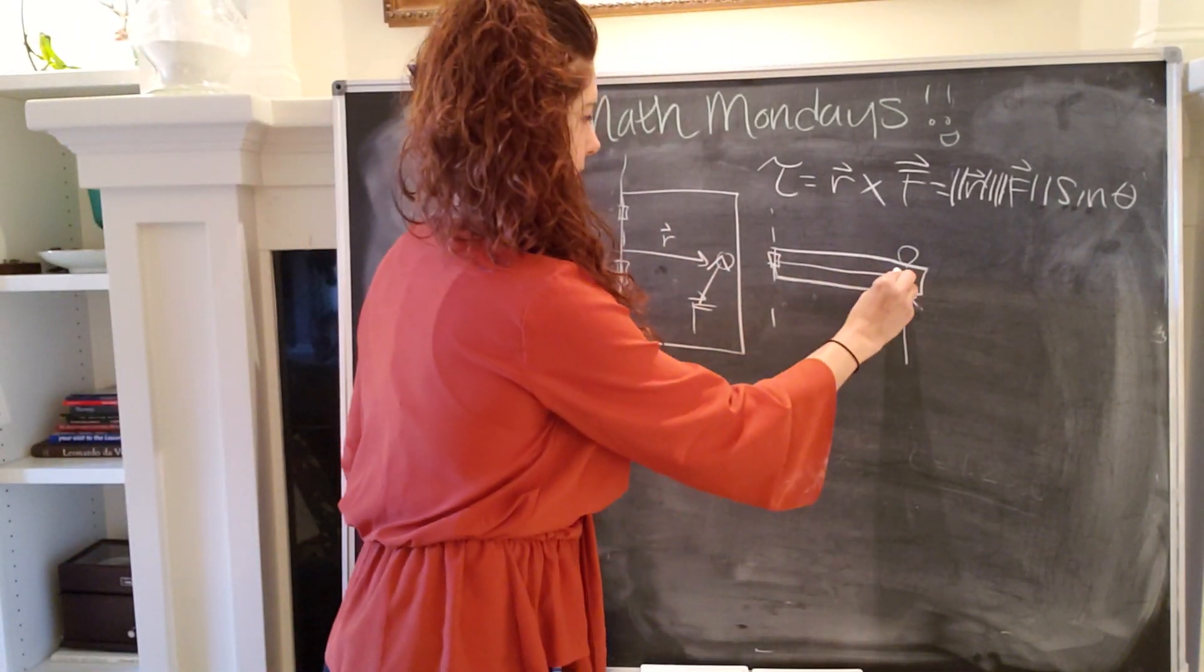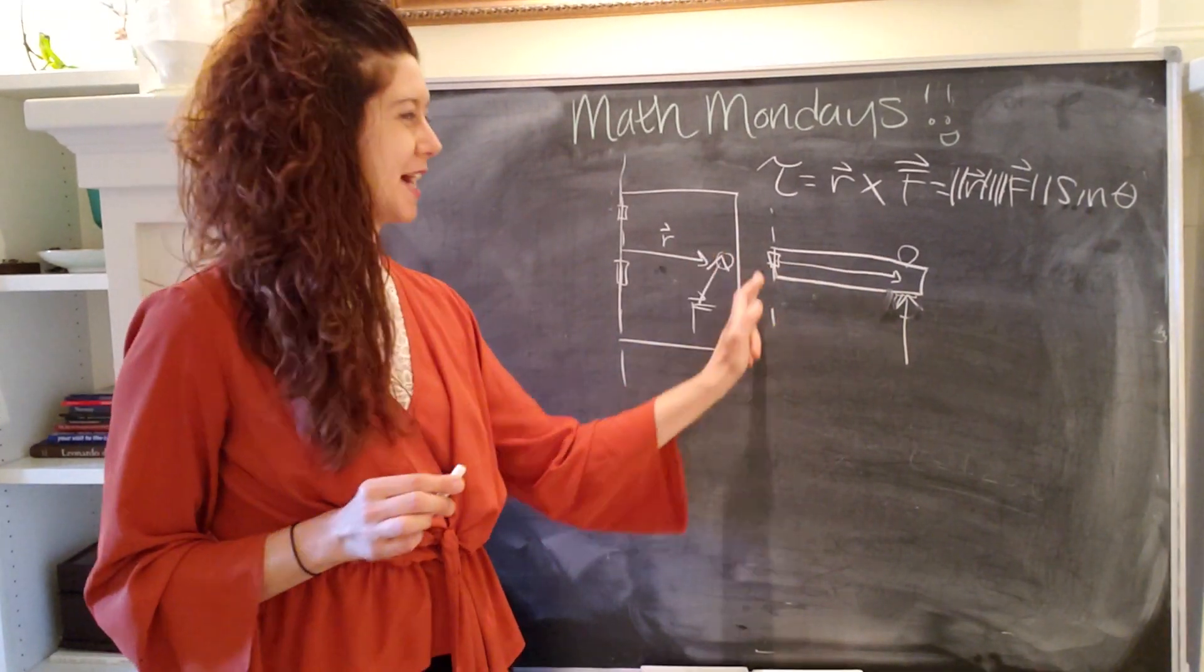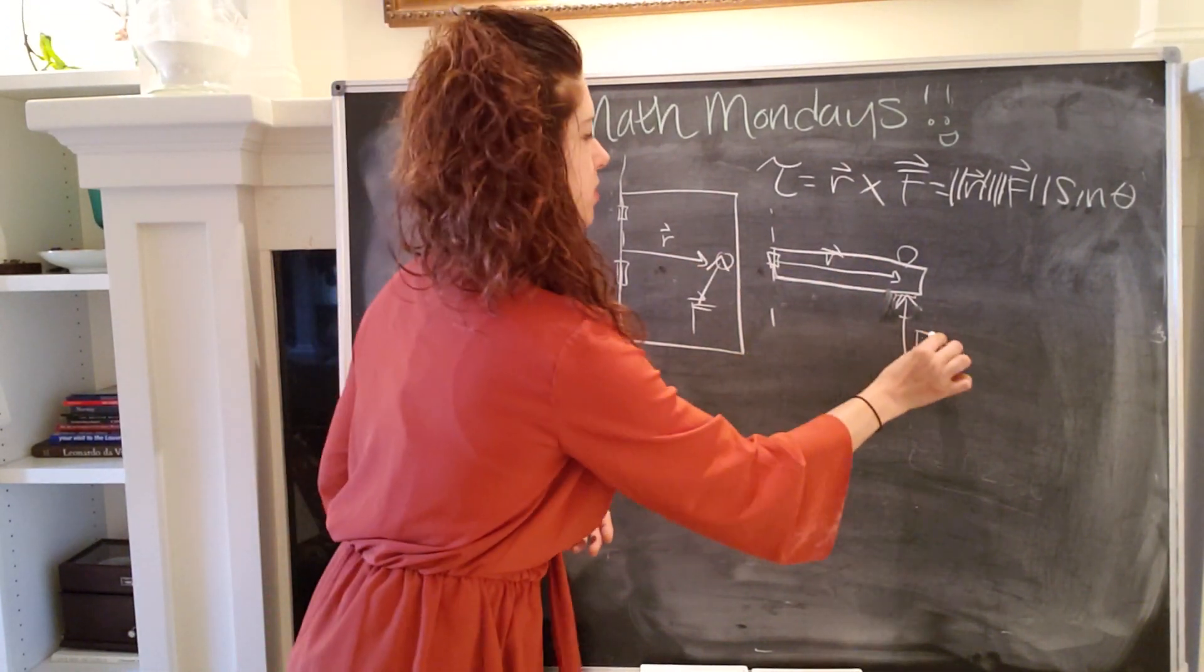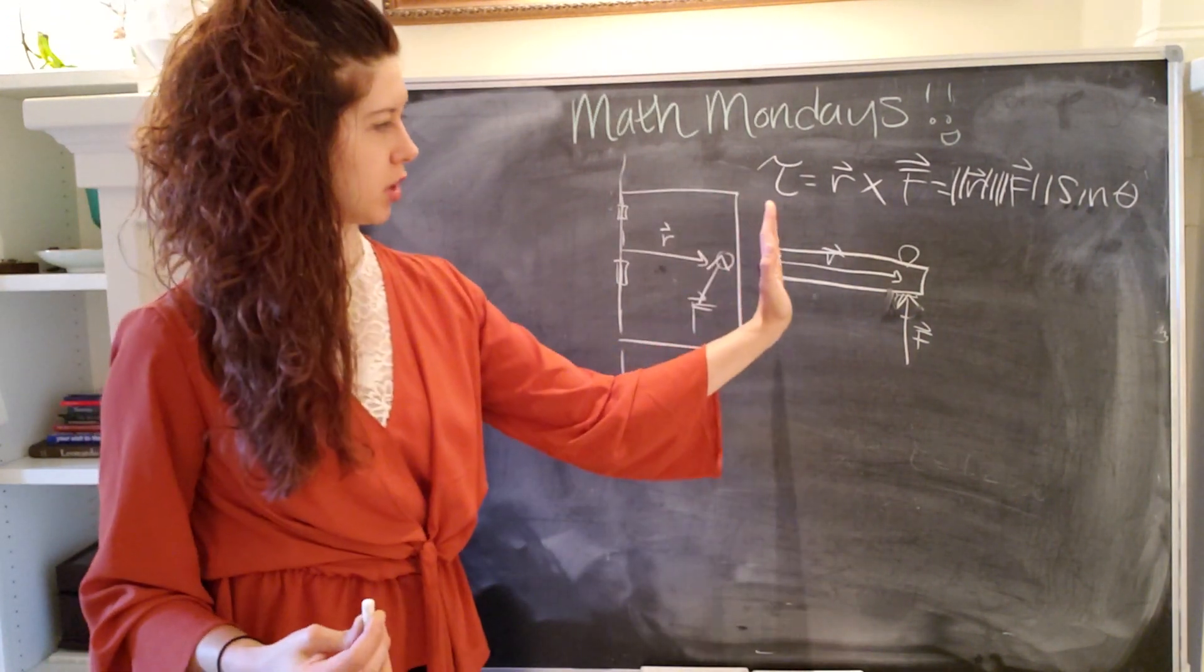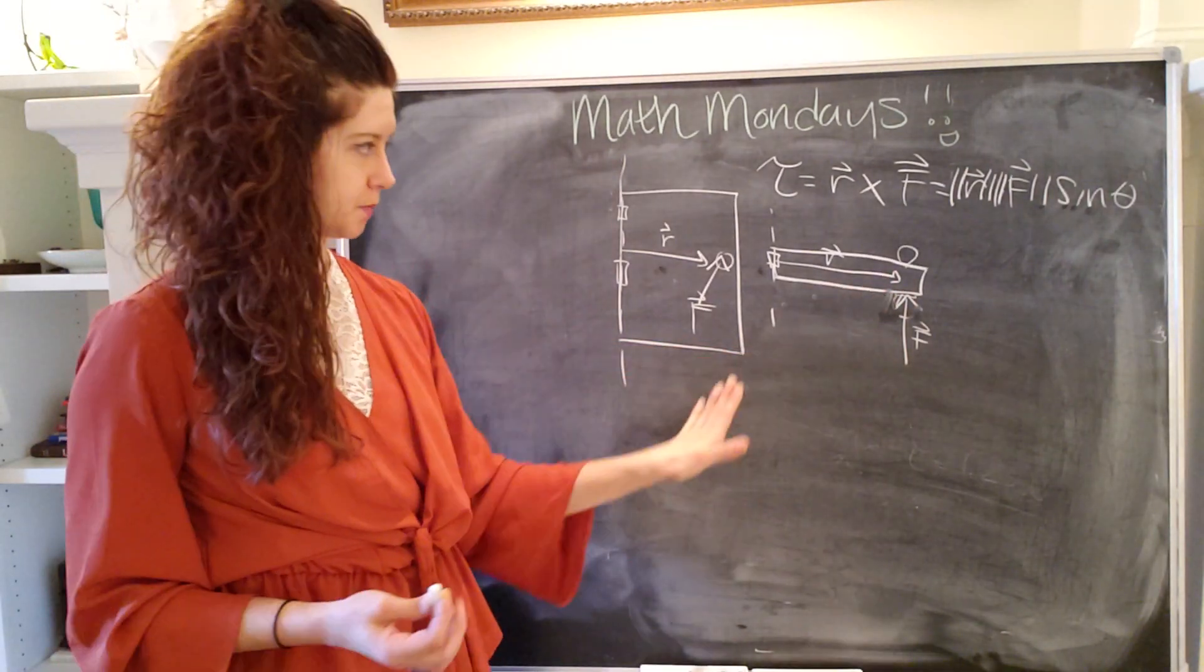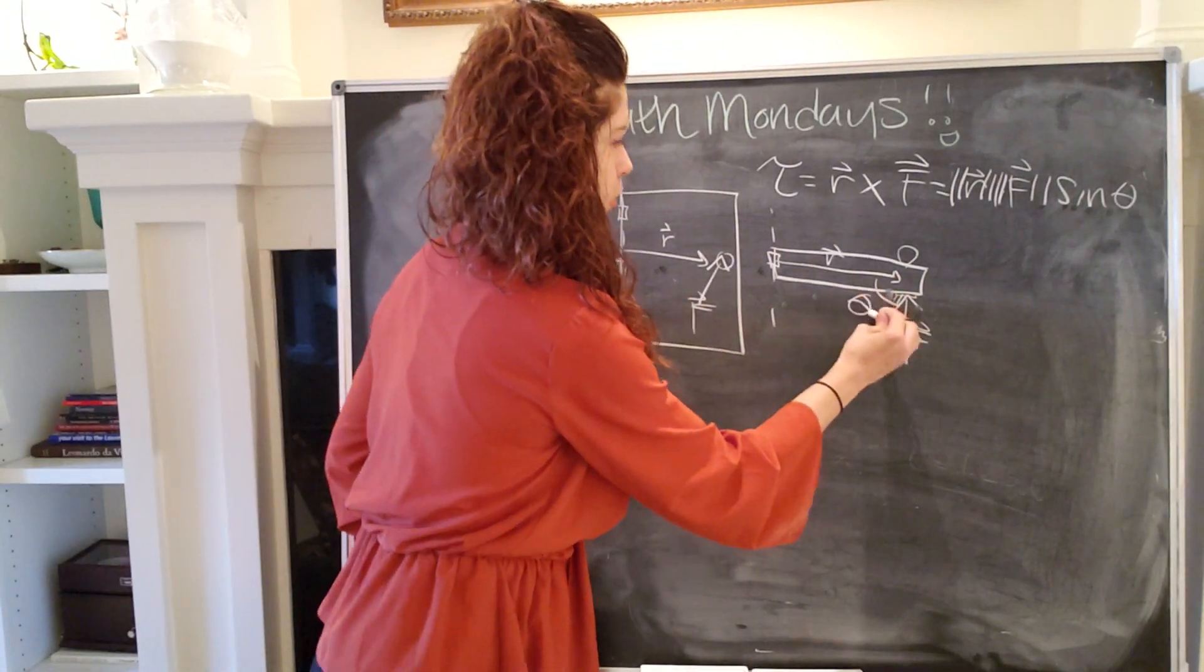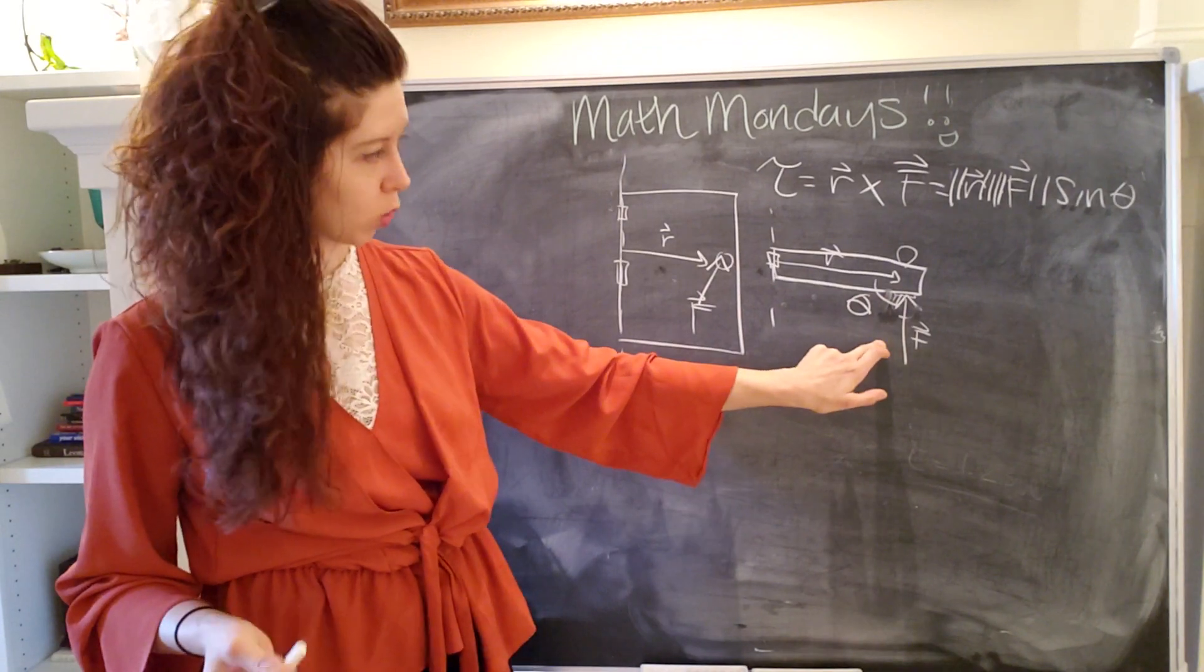The lever arm vector is measured from the axis of rotation to the point at which the force is applied. That's super, super important. It always points away from the axis of rotation to the force point. So the angle up here is the angle between the lever arm vector and the force vector.